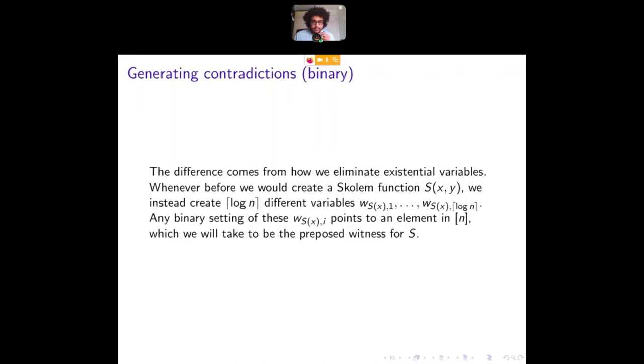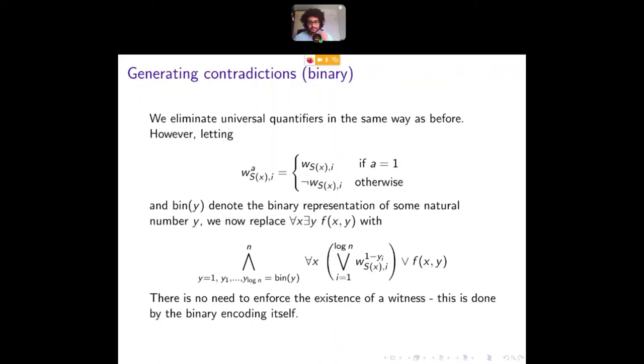So this is what we do. I would unpack this in detail and just say what it's doing. We say that, okay, for every Y in the domain, either Y is not the proposed witness, which is the same as saying that whatever binary assignment you give this thing doesn't match up with Y. Or if it is Y, if Y is the proposed witness, then you need to have this thing holding because that's what it means for Y to be the witness. So those are two different CNFs you can generate from the same first order formula.